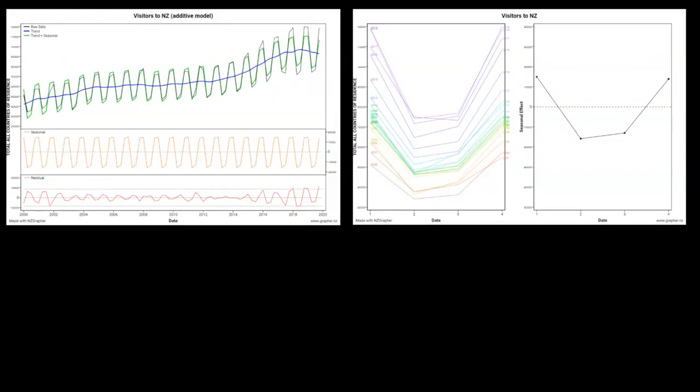Now if we take the visitor data that's available in NZGrapher, we get a bit of a different picture. This first graph is done with the additive model applied to it.